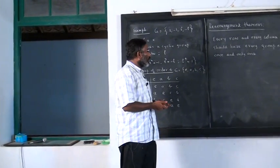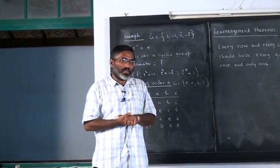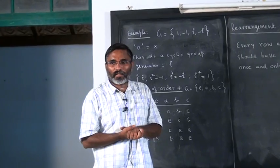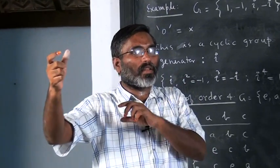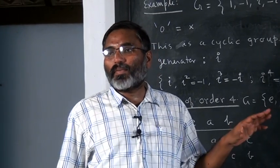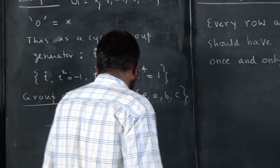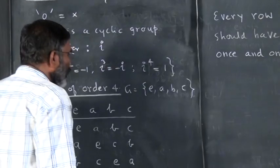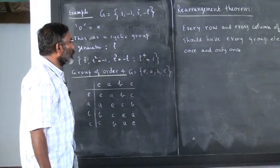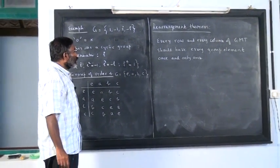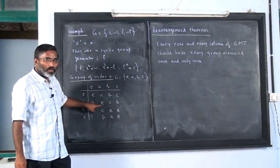You might have noticed that all cyclic groups are abelian. Because a² · a³ is the same as a³ · a² — it is a⁵. So all cyclic groups are abelian. That is an additional remark — it is very obvious, but for completeness I made that remark. Now if you see, this non-cyclic group of order 4 is different from the cyclic group.